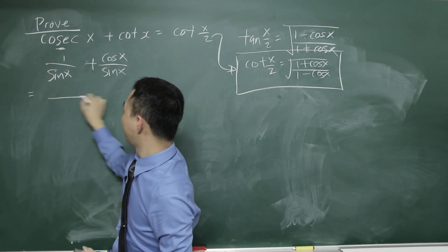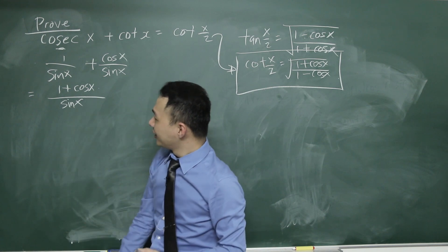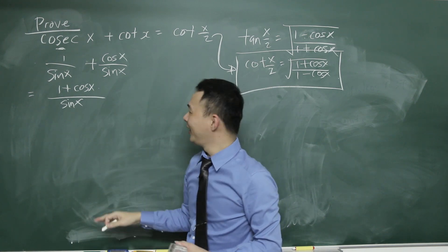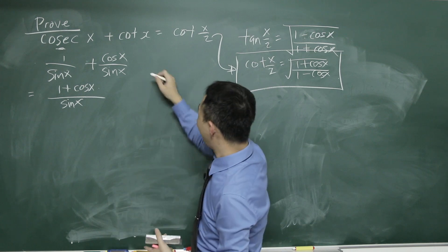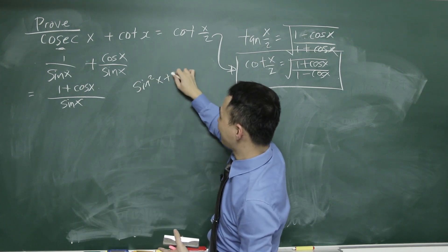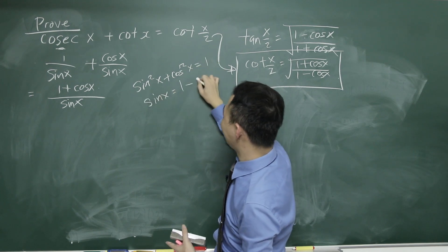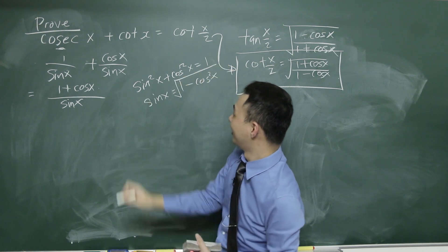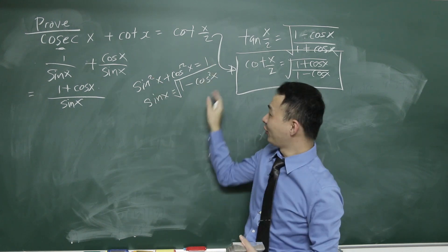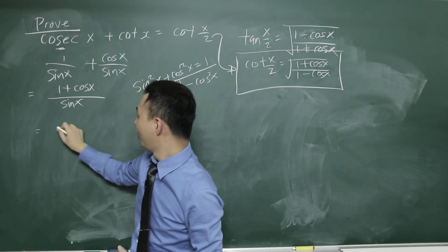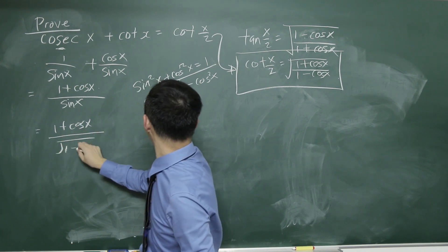Then in the second step, I can join them together. This gives sine x on the bottom and 1 plus cos x on top. Now I might need something like 1 minus cos, but sine x is not equal to 1 minus cos. However, I know the identity: sine squared x plus cos squared x equals 1. So sine x equals the square root of 1 minus cos squared x. I'm going to plug that into the bottom, giving 1 plus cos x over square root of 1 minus cos squared x.